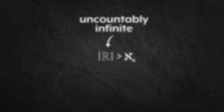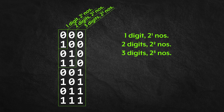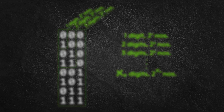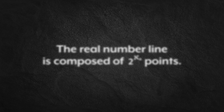But how big is it? For the moment, let's work in binary. With one digit, we can uniquely describe two numbers — two to the power of one. With two digits, we can uniquely describe four numbers — two to the power of two. With three digits, we can uniquely describe eight numbers — two to the power of three, and so on. And since aleph-not digits are required to describe the real numbers, there must be two to the aleph-not real numbers. The real number line is composed of two to the aleph-not points.